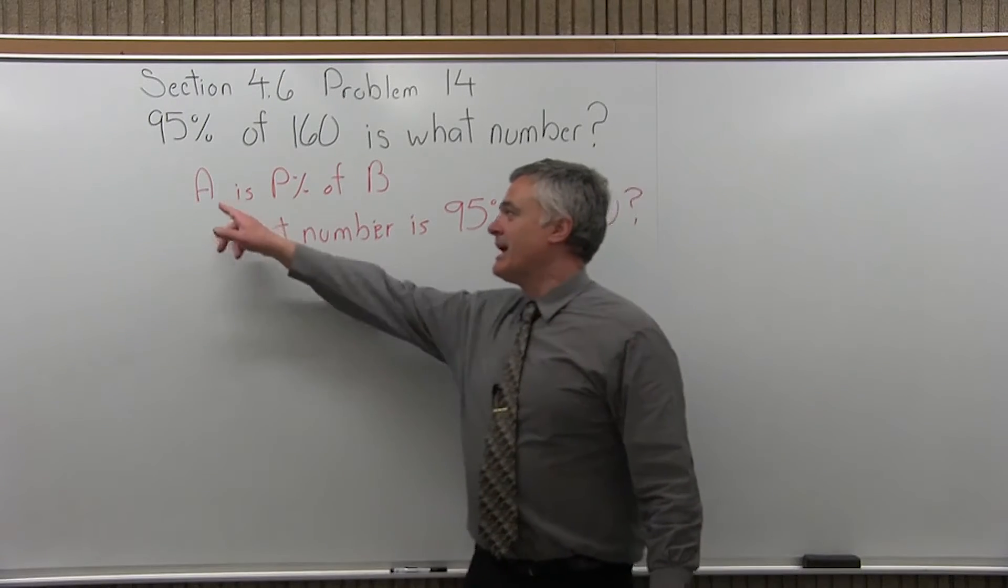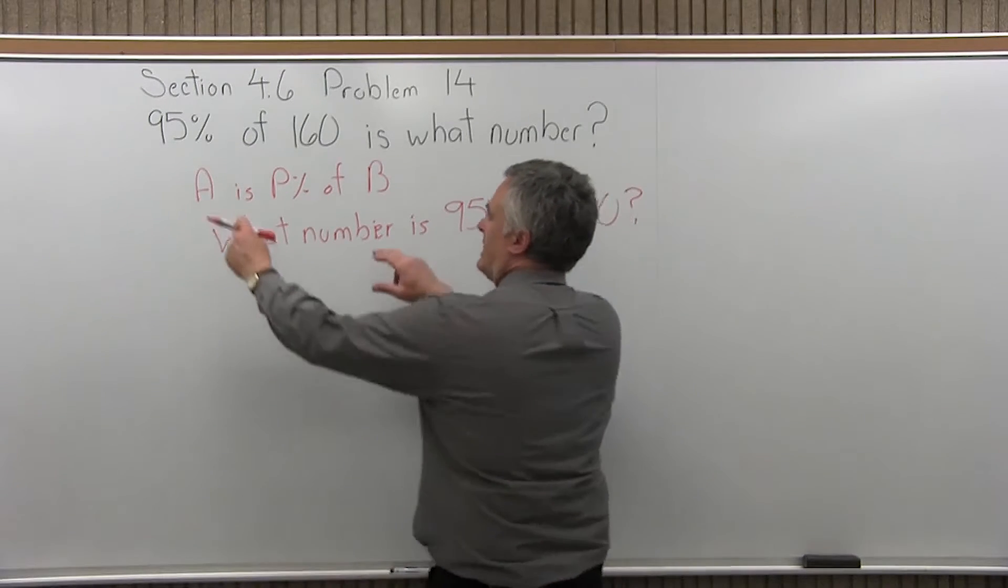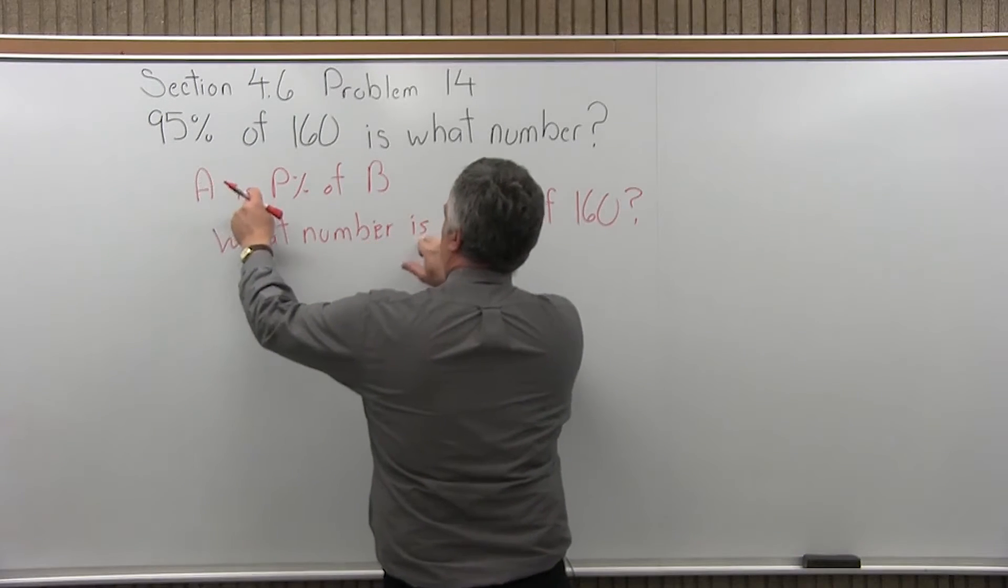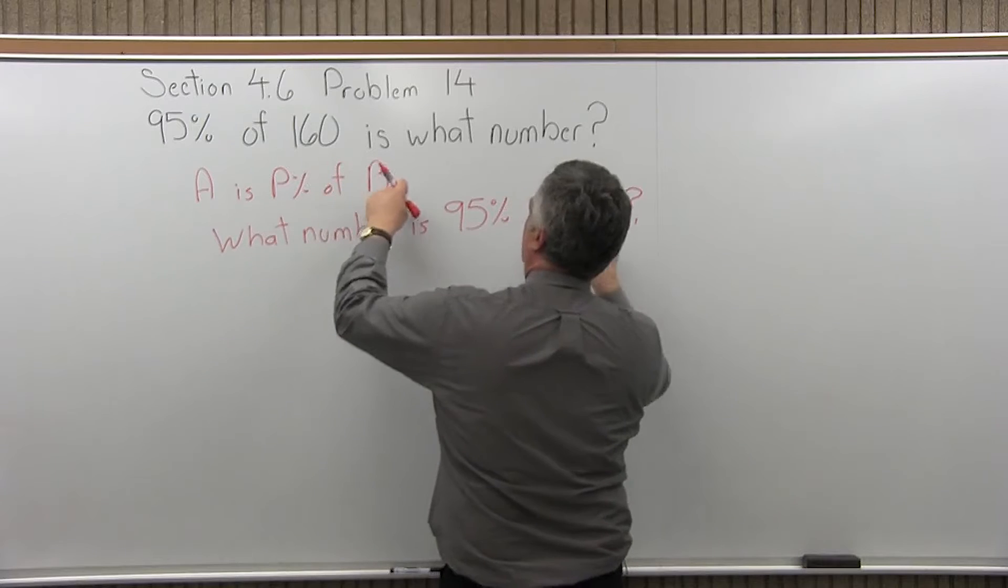Now it's in that format A is P percent of B. A is the unknown, the what number is P percent of B? It fits.